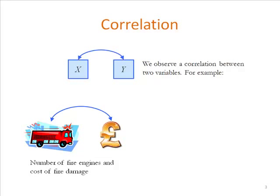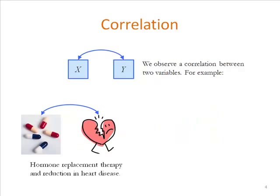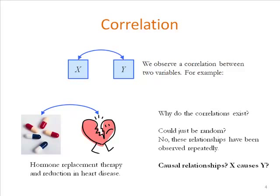The number of fire engines that attend a fire and the cost of the fire damage: highly correlated. Your shoe size and your driving skill: very highly correlated. And more seriously, hormone replacement therapy and a reduction in heart disease and stroke — that's a negative relationship. People who have hormone replacement therapy tend to be observed to have lower risk for heart disease and stroke. These things are well observed. But why do they exist? As a science-minded person, you want to know why — not just what the world is, but why, so we might perhaps be able to change it.